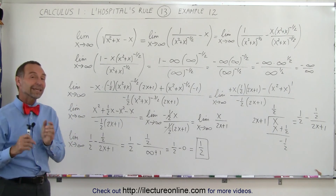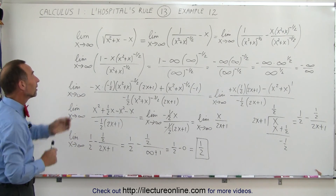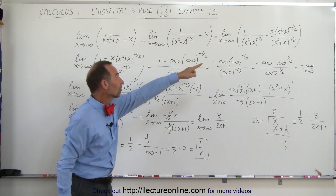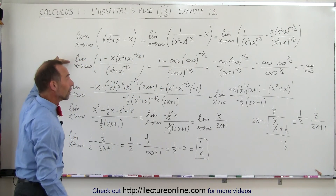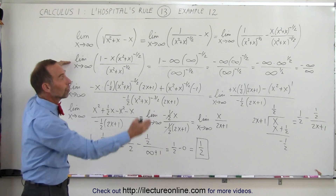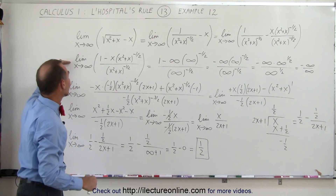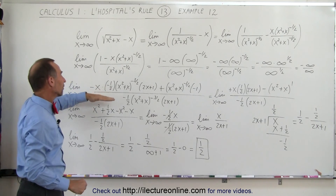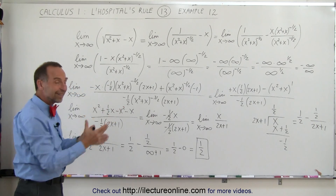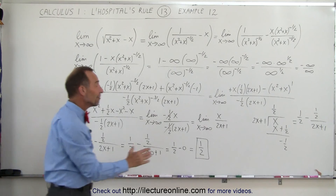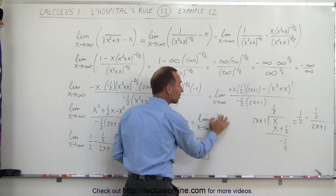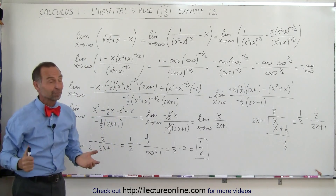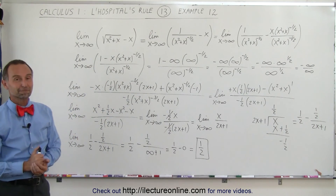Don't give up easily here — just keep going. First, put the expression into a format where you can check if you have the correct conditions for L'Hôpital's rule, which we did: infinity over infinity. Then take the derivative of the numerator and the derivative of the denominator, simplify, continue simplifying, and finally divide to put it into a format where you can find the limit of the function. And that's how it's done.